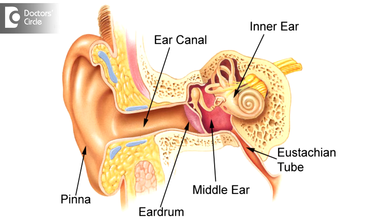Ear infections can be broadly divided into three different varieties. One is the infection of the external ear, which consists of the pinna and the ear canal and probably a part of the ear drum. The second type is middle ear infections, which will usually be a result of a cold or sore throat spreading up into the ear. And the third is inner ear infections.